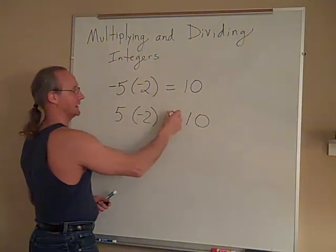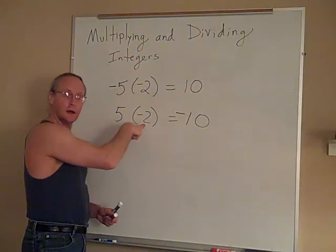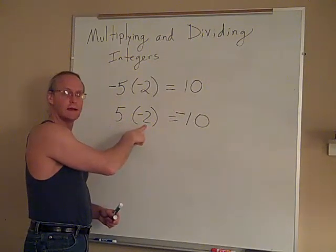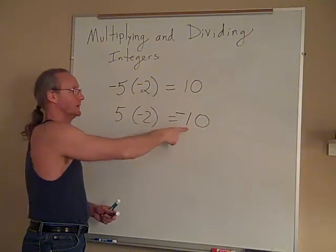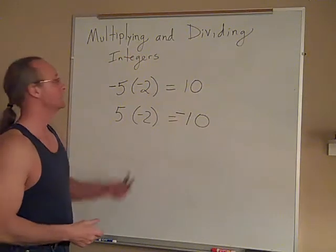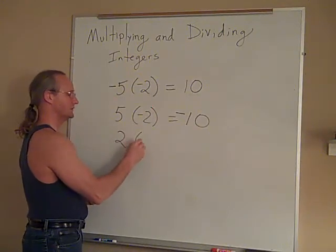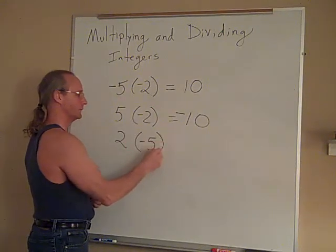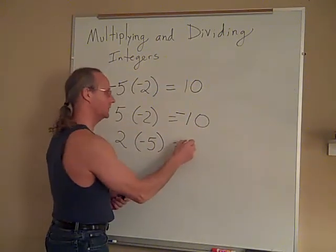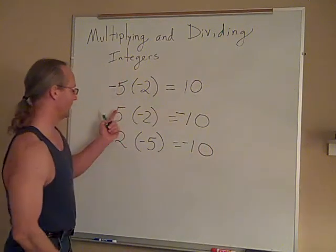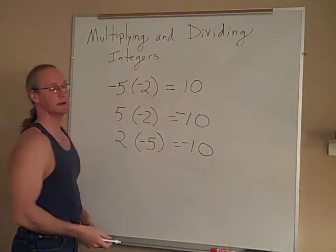One way to think of this is that five friends each have to spend $2 or owe $2. Five times owing $2 means that everybody together owes $10. This one isn't quite as easy to apply to real life, but here's the other situation: two times negative 5. Here's two friends who each owe $5. They still owe $10. Notice that a positive times a negative gives us a negative. Two negatives cancel each other out and give you a positive.